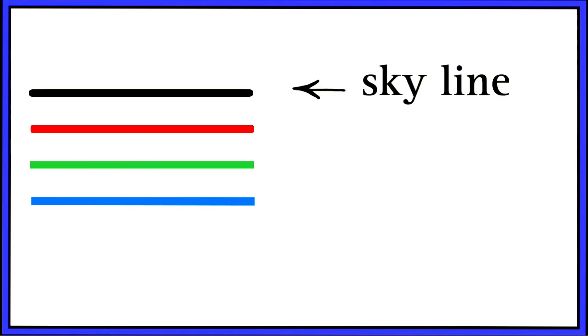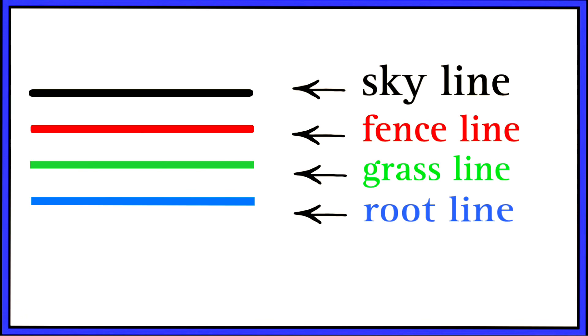First line is skyline. Second line is fence line. Third line is grass line. Fourth line is root line.